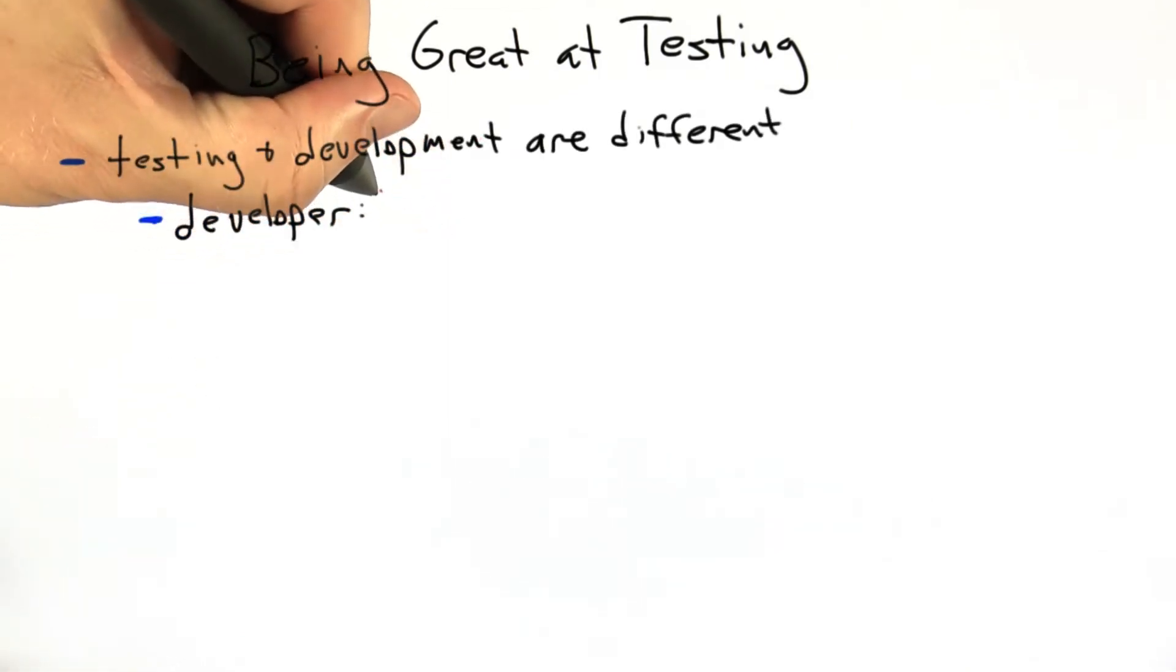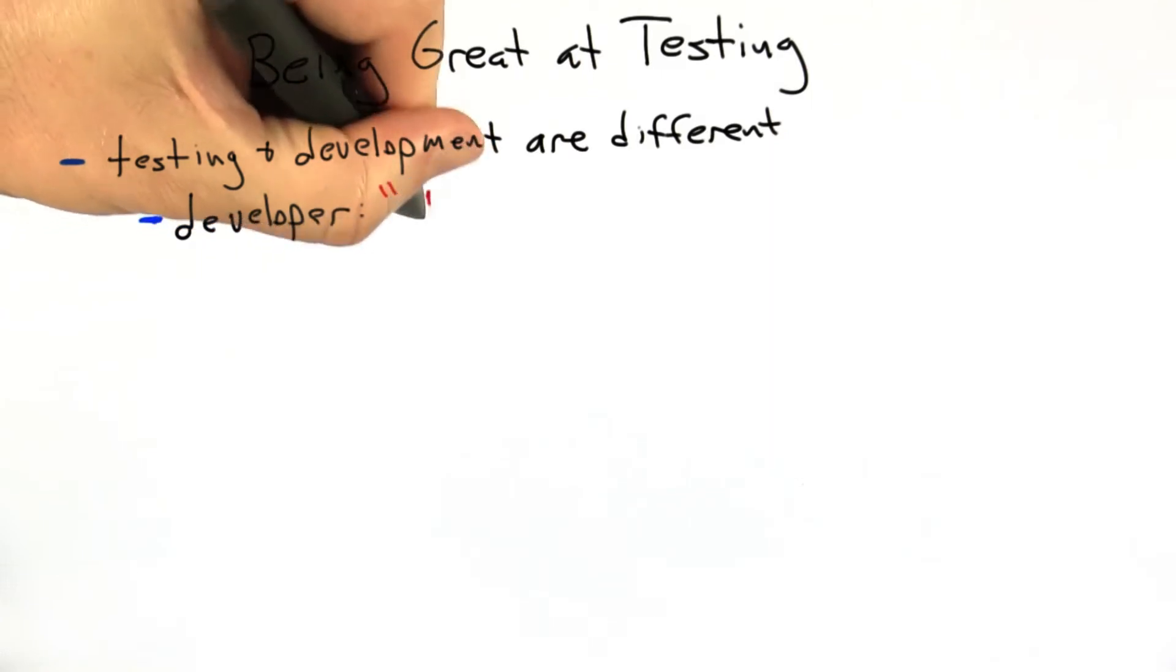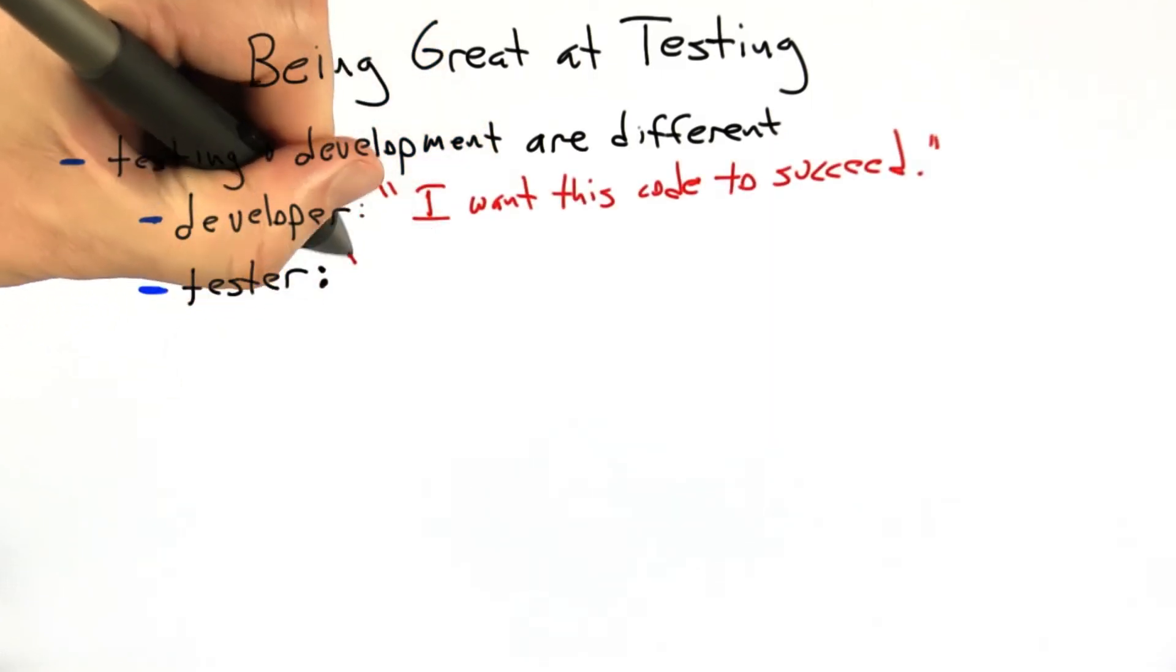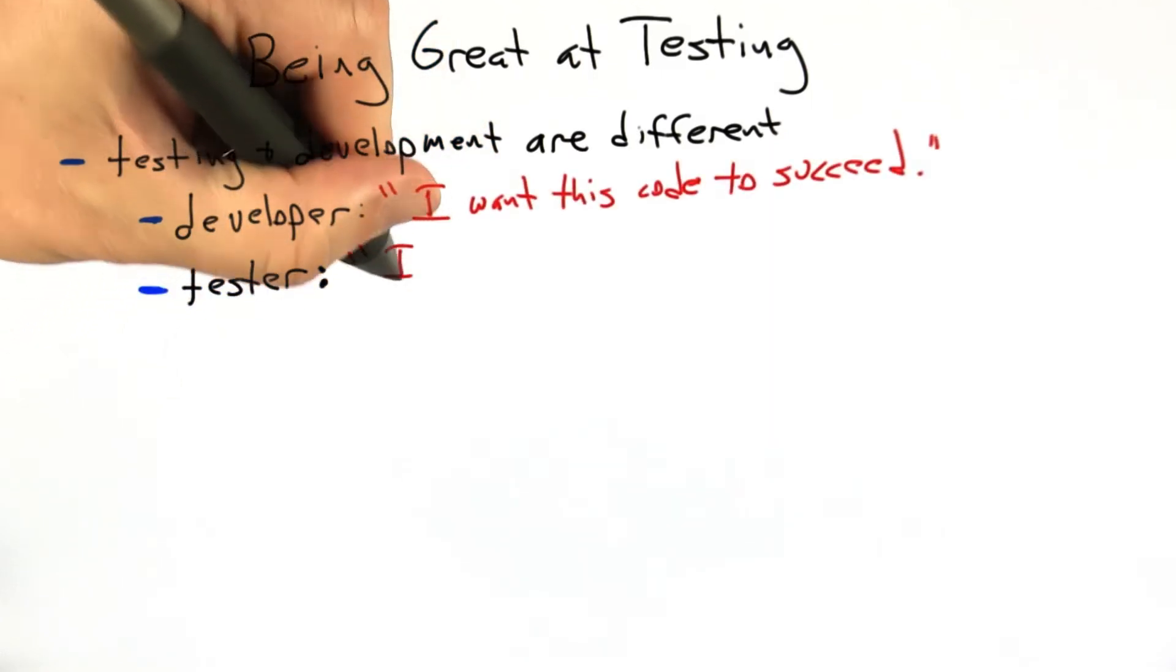The developer's primary attitude is, I want this code to succeed. The tester's main attitude is, I want this code to fail.